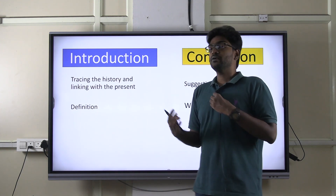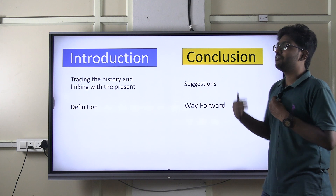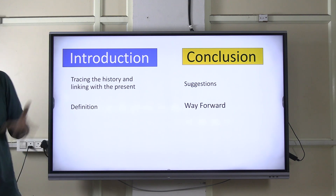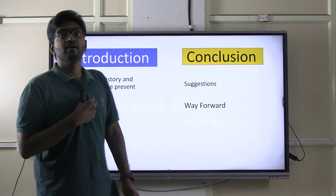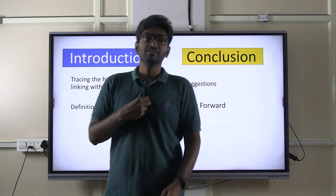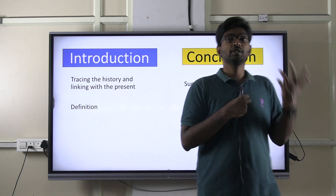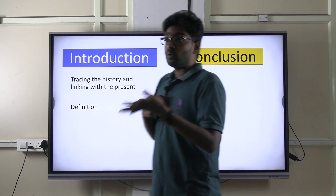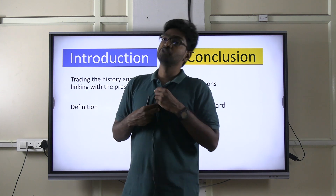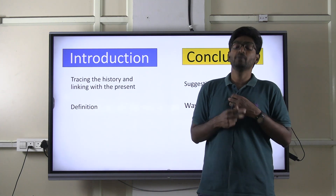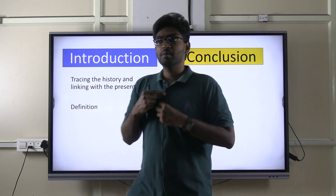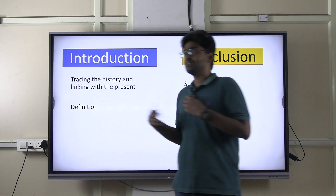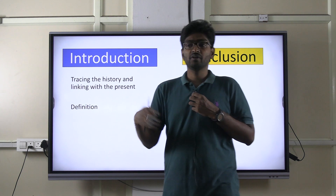You can also improve your conclusions by incorporating futuristic suggestions. For example, if the question is on artificial intelligence, you can write about the Asilomar Principles which guide the usage of AI. Similarly, if the question is on blockchain technology — currently one of the emerging technologies — you can write about the principles framed by the World Economic Forum that countries can take into account. Definitely, this will fetch at least half a mark to one mark.